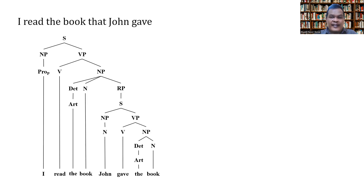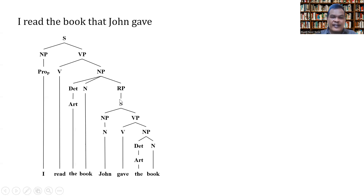We start the analysis by dividing the sentence into NP and VP. The NP is represented by the personal pronoun 'I,' and the verb is 'read.' The NP is composed of a determiner, a noun, and an RP — that is, a relative clause. The RP is composed of a sentence, which is in turn composed of NP and VP. The NP here is the noun 'John,' and the VP is composed of a verb and NP, where the NP is composed of a determiner and a noun.